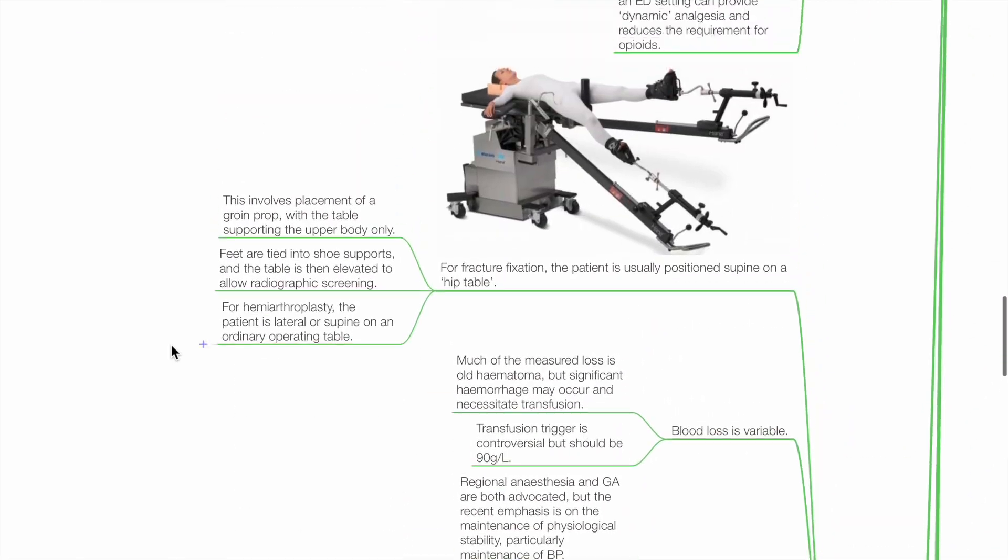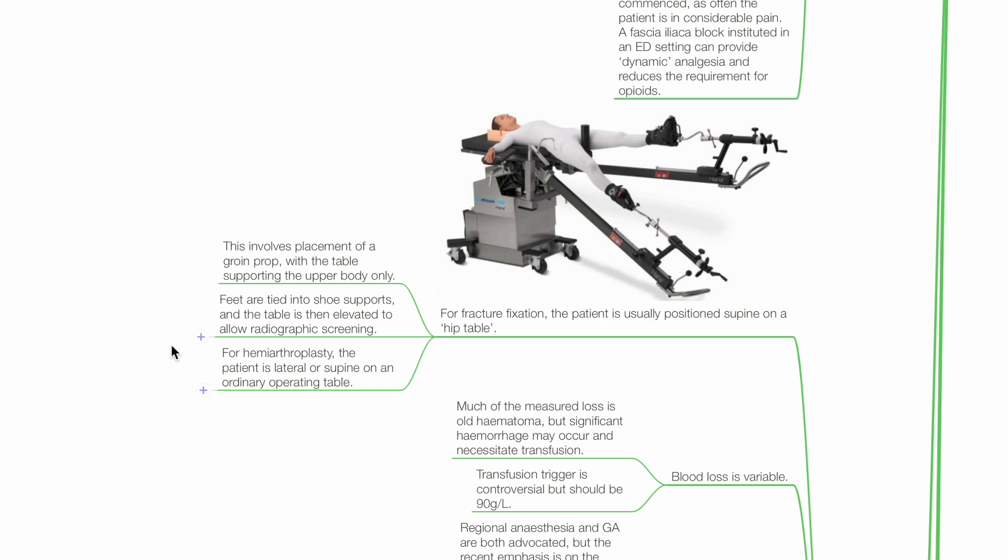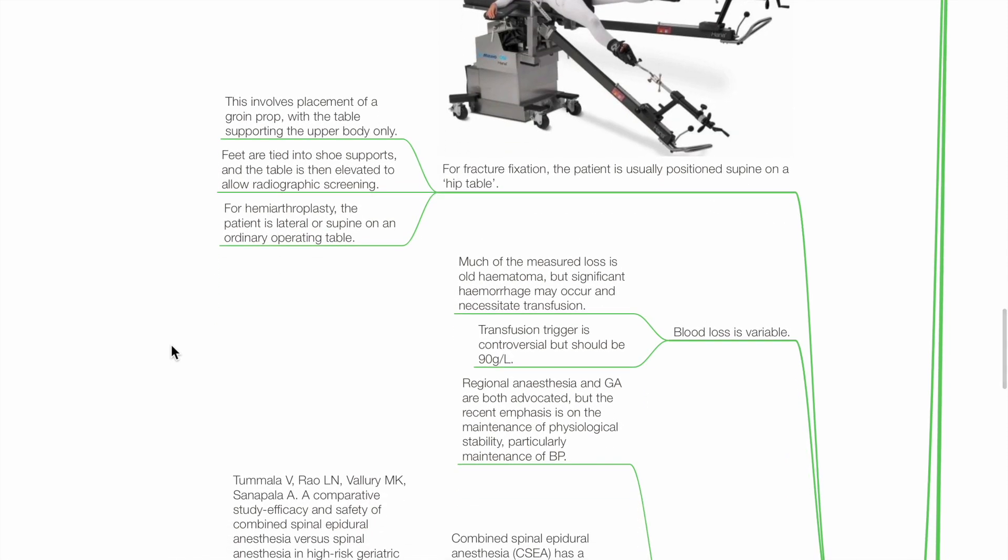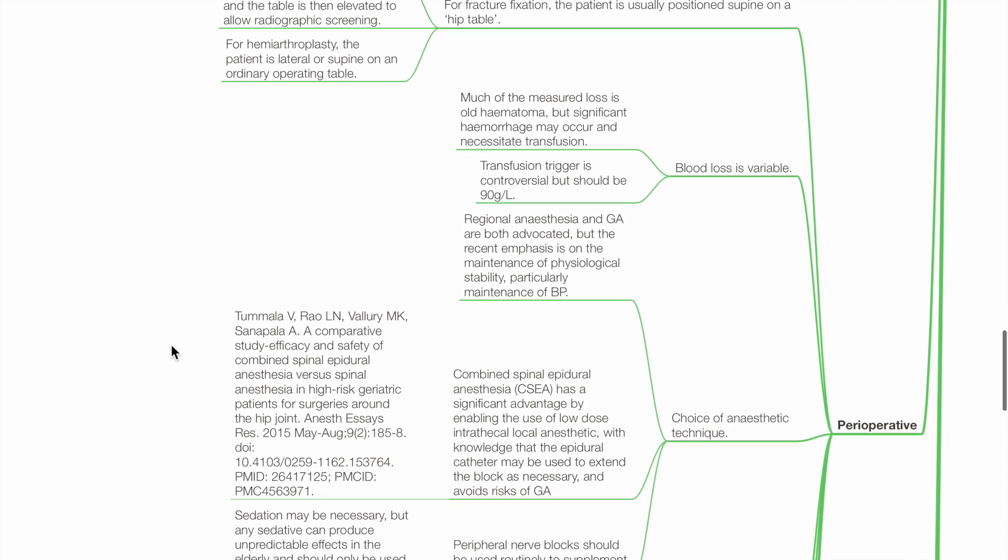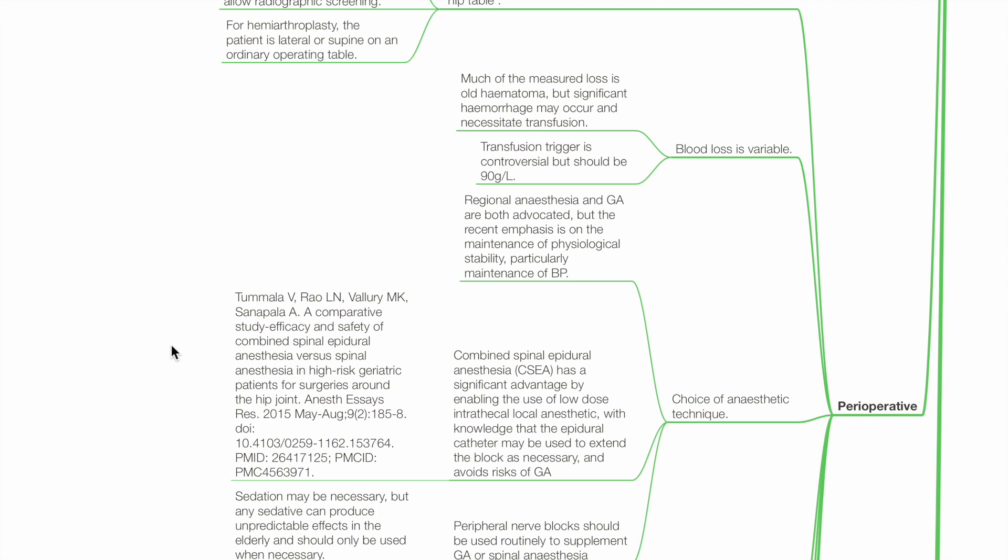Perioperative. For fracture fixation, the patient is usually positioned supine on a hip table. This involves a placement of a groin prop with the table supporting the upper body only. Feet are tied to the shoe supports and the table is then elevated to allow for radiographic screening. For hemiarthroplasty, the patient is lateral or supine on an ordinary operating table. Blood loss is variable. Much of the measured blood loss is old hematoma but significant hemorrhage can occur which may necessitate transfusion. Transfusion trigger is controversial but should be 9 grams per deciliter.